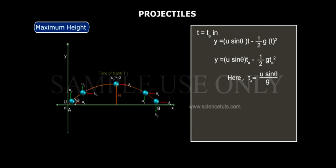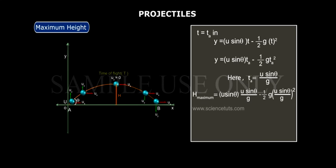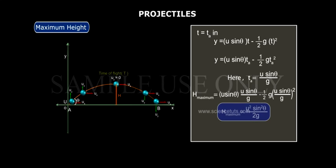Here, T_A = U sinθ / g. Substituting, h_max = U sinθ · (U sinθ / g) − (1/2)·g·(U sinθ / g)². Therefore, h_max = U² sin²θ / 2g.